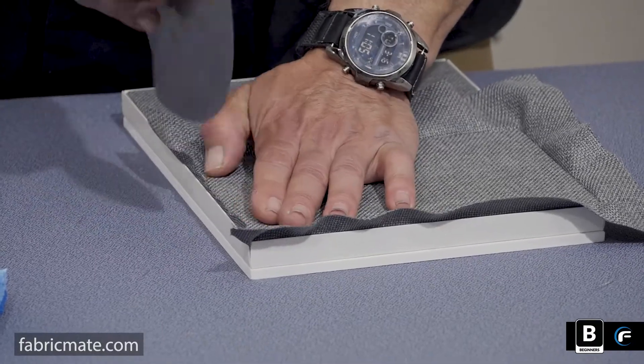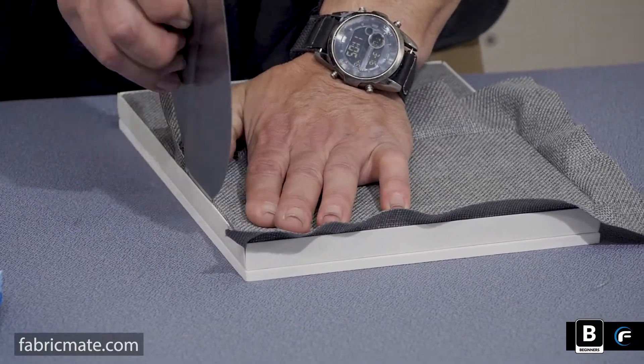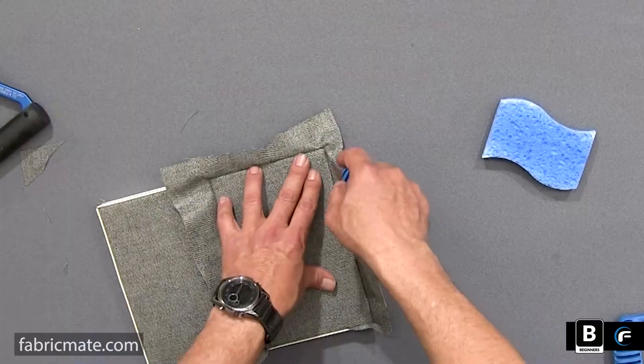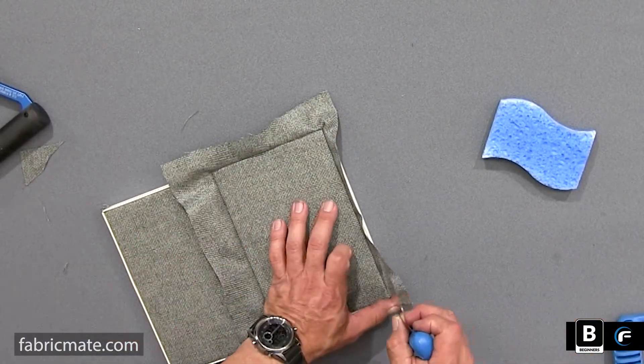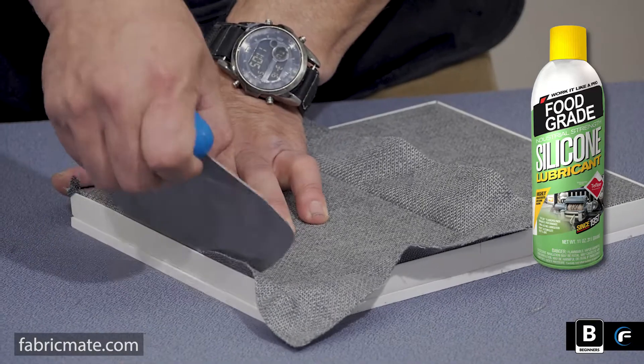Sometimes you may have a fabric that it doesn't seem to be going in, since you are doubling over the fabric on the tool there. So again, food grade silicone will help to allow that to slip in there.